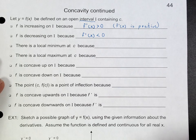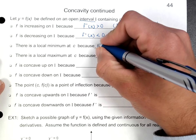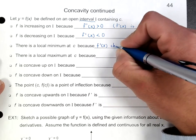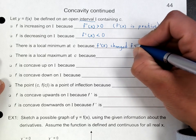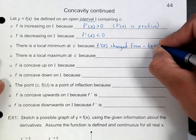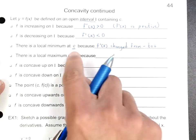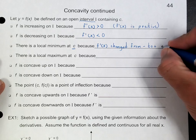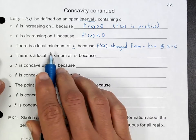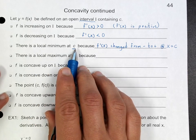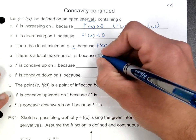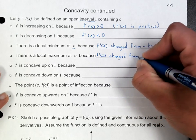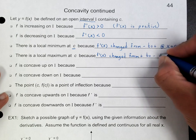There is a local minimum at c. When do we have a local minimum? That happens when the derivative changes from negative to positive at that c value. We have a minimum if around this value the derivative changed from negative to positive. And there's a local maximum if the derivative changed from positive to negative at that same value.